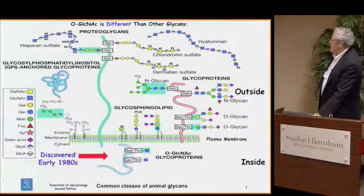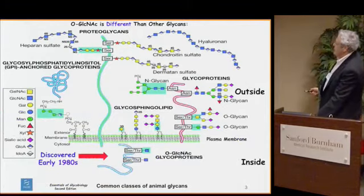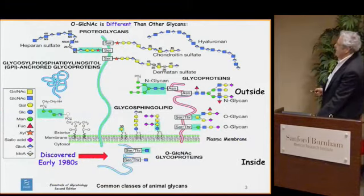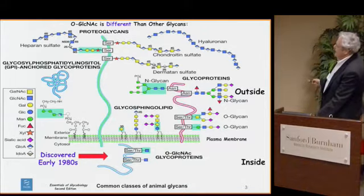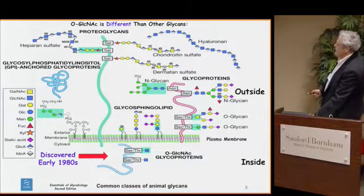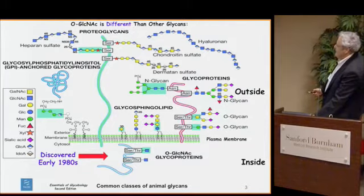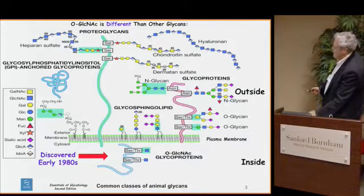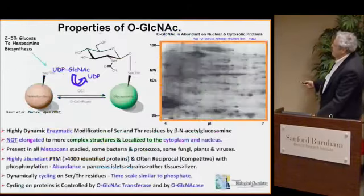Now 30 years ago, we stumbled on the fact that nuclear and cytoplasmic proteins are modified by a monosaccharide N-acetylglucosamine. You all know about all these complex glycans, but at the time, the textbook said protein glycosylation did not occur in the nucleus and cytoplasm — and that's not true. In fact, we now know that this is one of the most abundant forms of protein glycosylation.